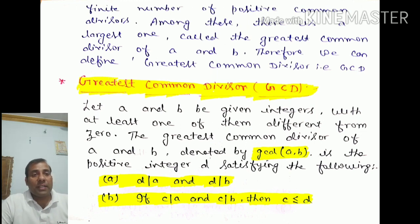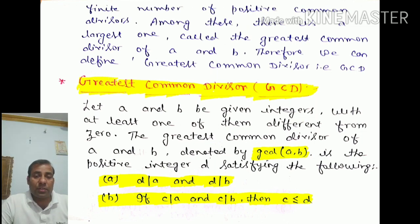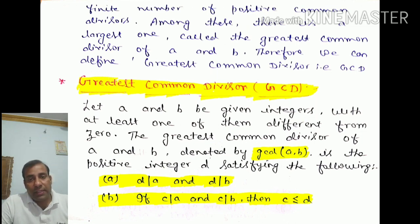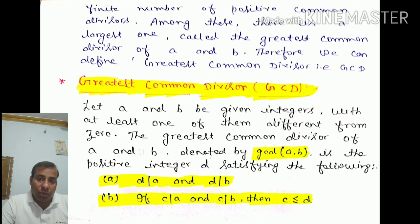Among the positive common divisors, there is a largest one called the greatest common divisor of A and B. For example, if we take 6 and 12, the divisors of 6 are 1, 2, 3, 6, and the divisors of 12 are 1, 2, 3, 6, and 12. The common divisors are 1, 2, 3, and 6, and out of these the largest divisor is 6.